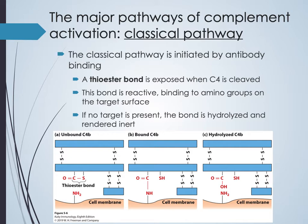The classical pathway has checkpoints. When C4 is cleaved, a thioester bond is exposed, and if nothing binds to that bond — meaning it isn't targeting anything — it gets hydrolyzed and becomes inert. There's regulation beyond just antibody binding; there are checkpoints along the way to prevent uncontrolled cascade activation.